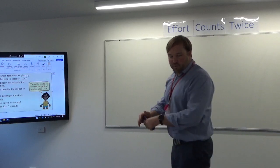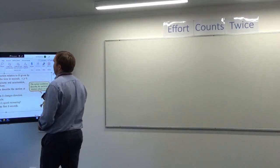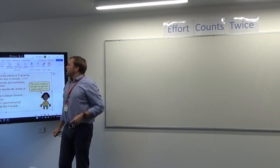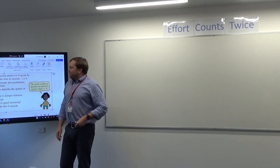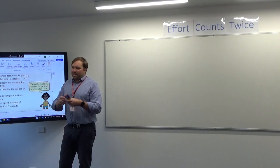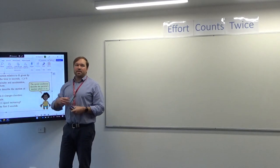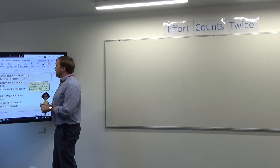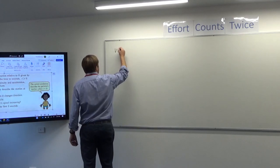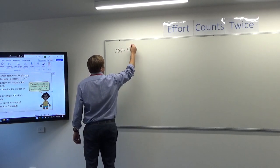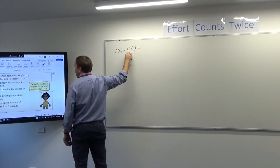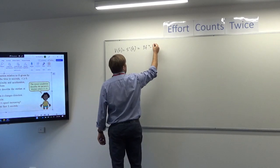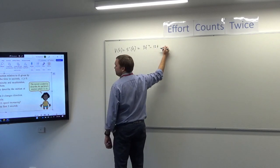A particle moves in a straight line with position relative to O given by s(t), where t is the time in seconds. Find the expressions for the particle's velocity and acceleration, and draw a sign diagram for each. So we differentiate and differentiate again, then do sign diagrams for each. So v(t), which is the same as s'(t), is going to be 3t² − 12t + 9.